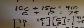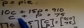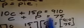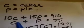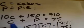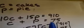Cakes sell for $10 and pies for $15 for a total of $910, so we do all the money in one equation. Then we do the numbers: some number of cakes plus some number of pies equals 75. Since c stands for the number of cakes and p stands for the number of pies, we can put that all in one equation.